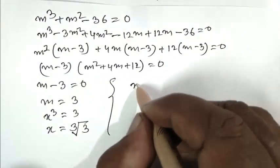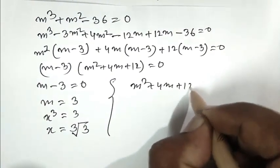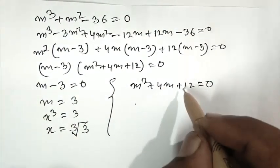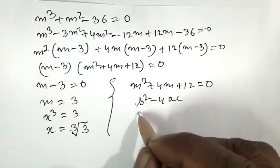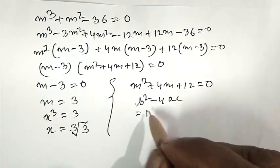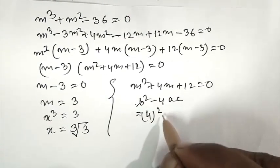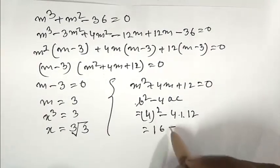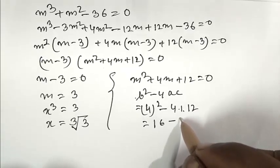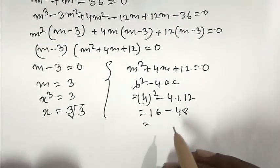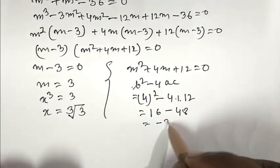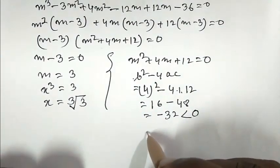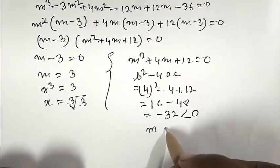Now we take the other factor: m squared plus 4m plus 12 equals 0. From the quadratic formula, we check the discriminant b squared minus 4ac, that is 4 squared minus 4 times 1 times 12, which is 16 minus 48, giving minus 32, which is less than 0. So the values of m here are imaginary, meaning m is imaginary.